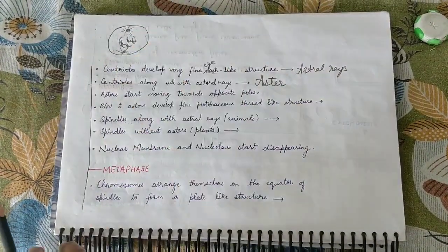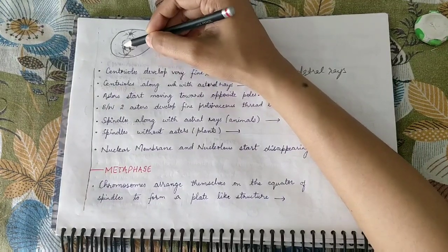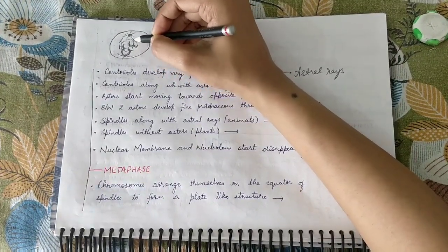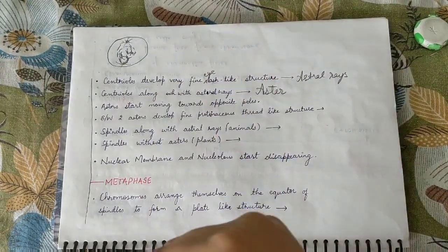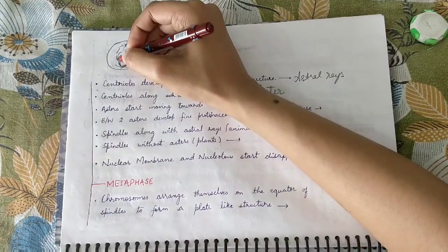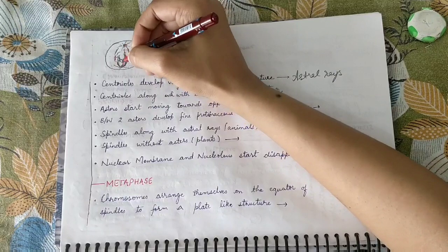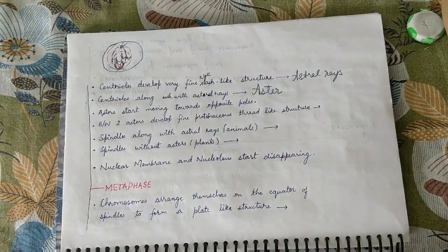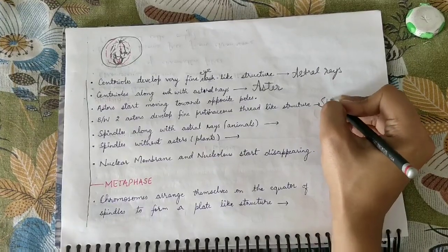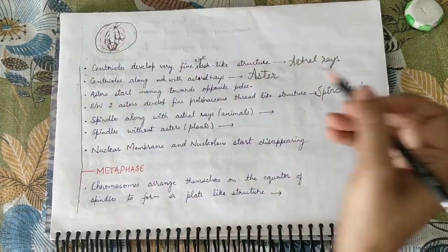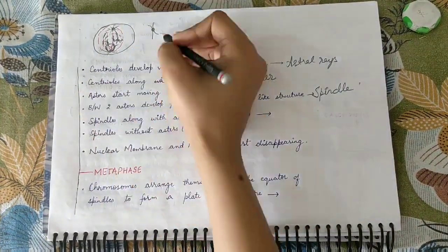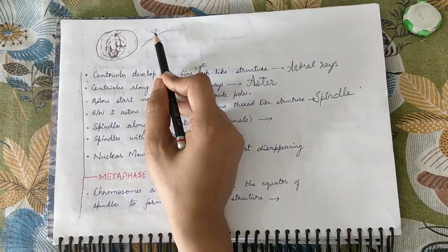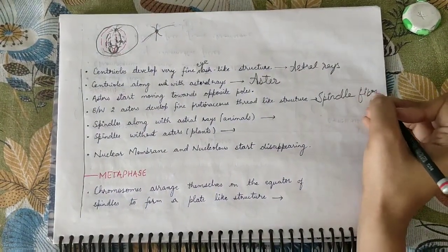Between the two asters, proteinaceous thread-like structures develop called spindle fibers. These spindle fibers attach to the chromosomes at the centromere. The contraction of these spindle fibers drives chromosome movement in subsequent phases.